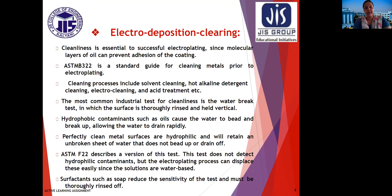Now, electrodeposition cleaning — how we can clean the metals and the anode and cathode after the process. This is important because chemical reactions occur and we need to clean all the ions. Cleanliness is essential to successful electroplating since molecular layers of oil can prevent adhesion of the coating. ASTM B322 is a standard guide for cleaning metals prior to electroplating. Cleaning processes include solvent cleaning, hot alkaline detergent cleaning, electro cleaning, and acid treatment.